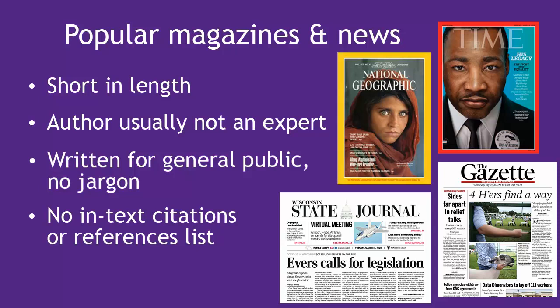Examples of popular magazines are Time and National Geographic, and examples of newspapers include the Wisconsin State Journal and the Janesville Gazette. These sources contain great information for general reading or for getting an introduction to your research topic, but they usually aren't appropriate for research papers unless you're studying something like how an issue is reported in the popular news.